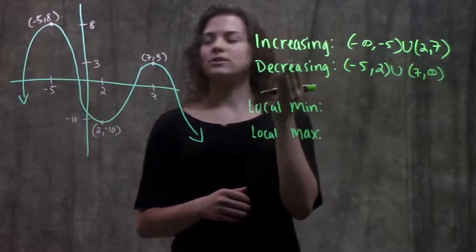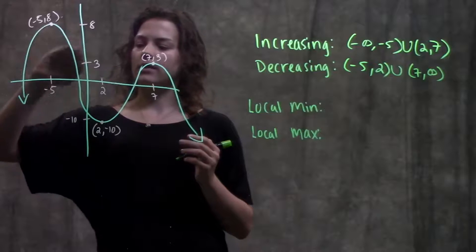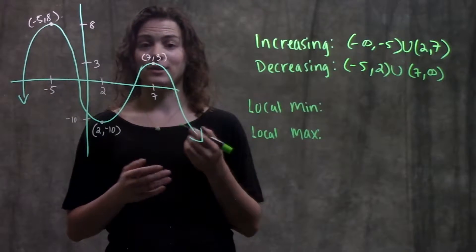We see that our function is increasing or going up on these two intervals, and is decreasing on these other intervals where it's going down or has a negative slope.